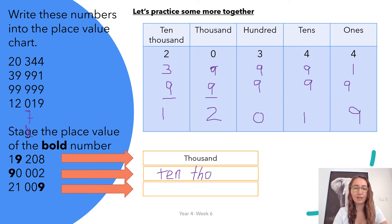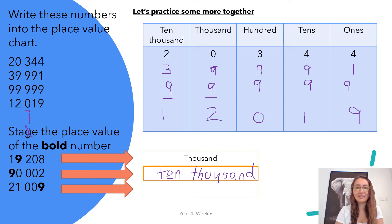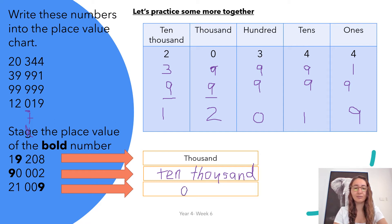You might even write next to it in brackets: 90,000. It's up to you. Nine: 10,000. Then the nine in 21,009 has the place value of ones. Now it's your turn.